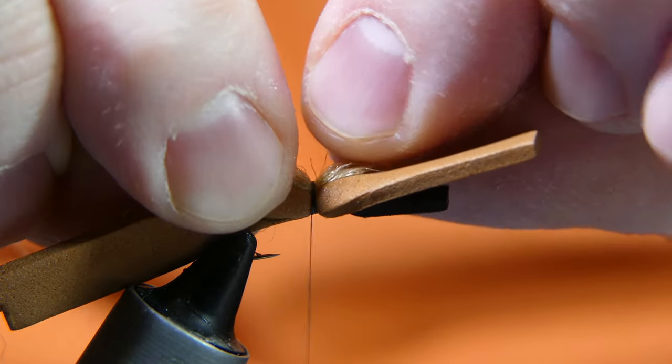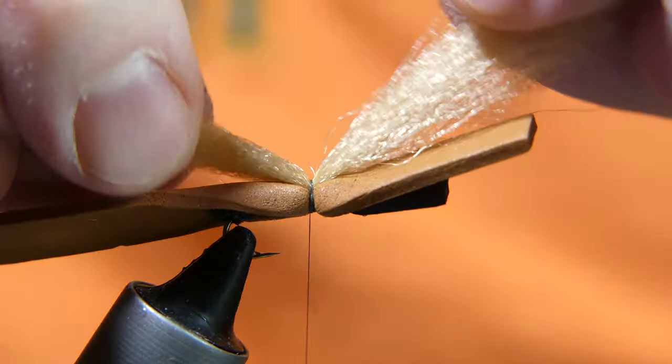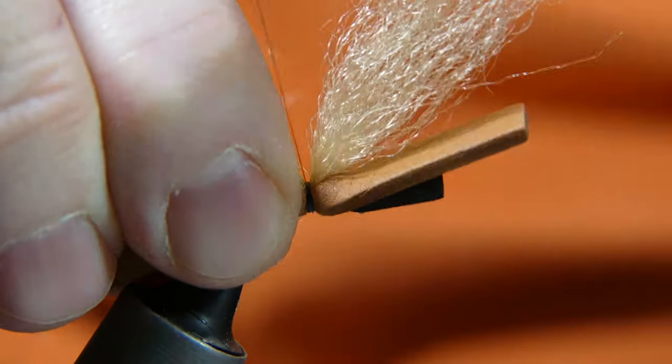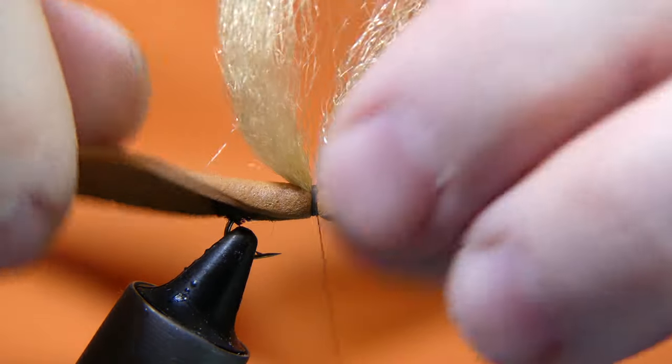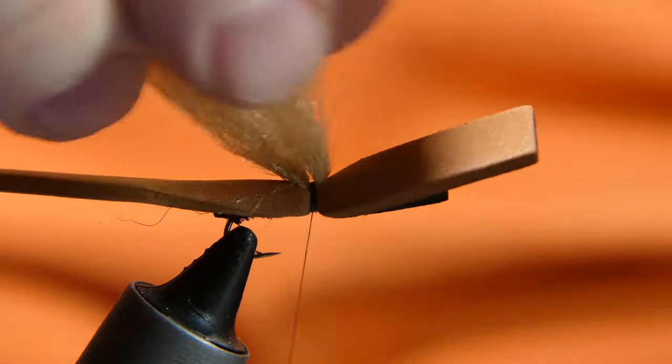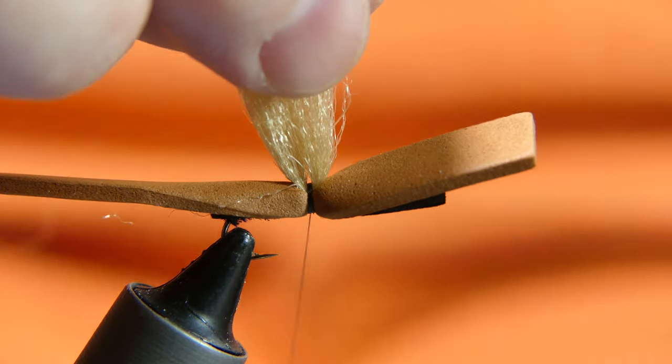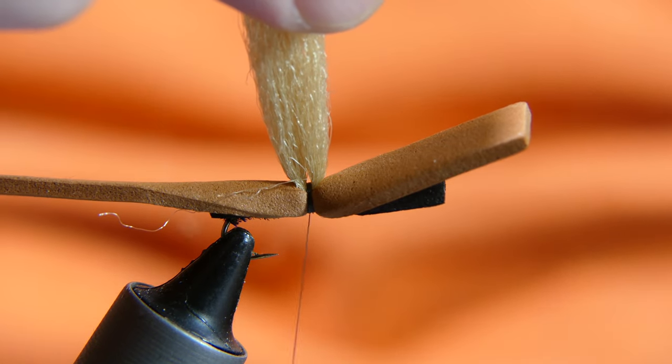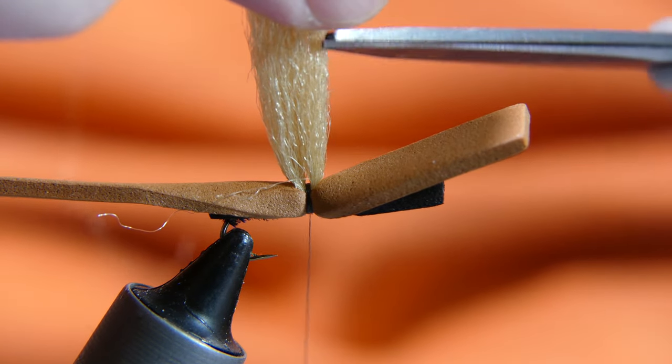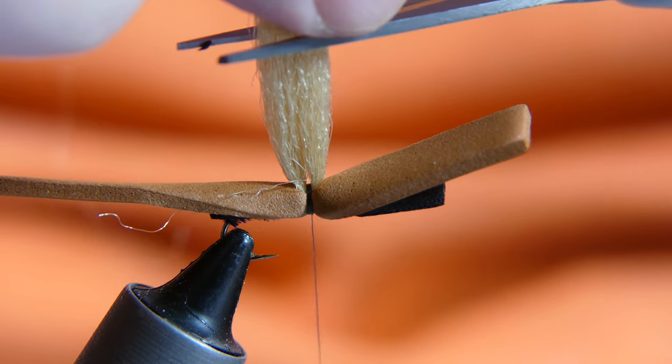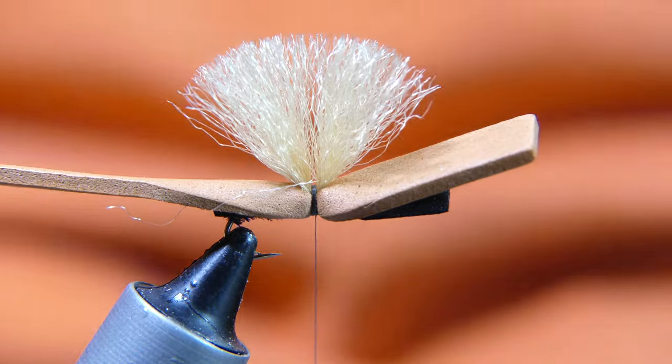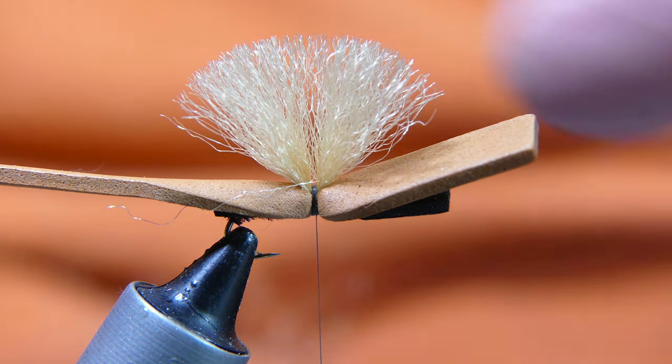Couple more wraps. Check the centering again. Looks good. Go ahead and tie it in, just a couple turns is all you need there. Make sure you're not twisting everything around here. Now take your EP fibers, pull them straight up, cut them to length. The length I want is just about an inch or so, maybe not quite an inch, maybe three-quarters of an inch. Just like that, nothing too crazy.